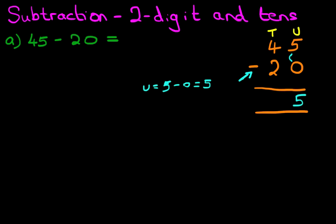Now we'll do the tens column. So let's write that down here. Tens, 4 minus 2. 4 minus 2 is 2. And we have our answer. 45 minus 20 is 25. That is correct.